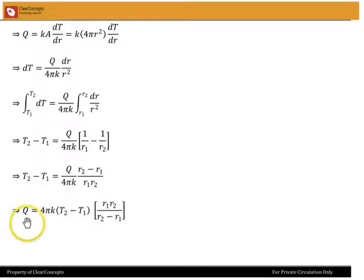Q equals 4πK times T2 minus T1 into R1R2 divided by R2 minus R1.